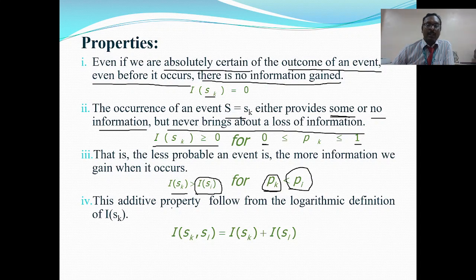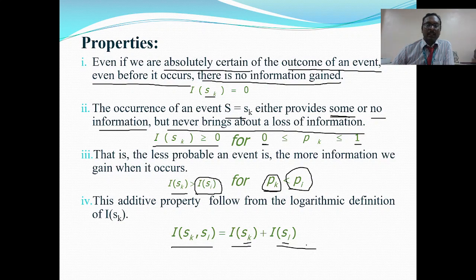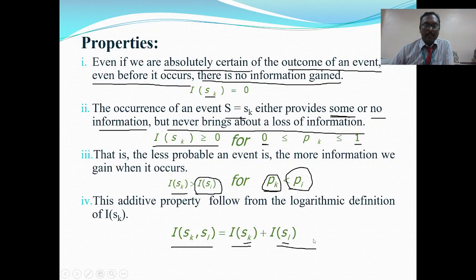Property 4: The additive property. If we have two statistically independent events Sk and Sl, then the information of their joint occurrence I(Sk, Sl) is equal to the addition of their individual informations: I(Sk) + I(Sl). These are the four properties of information theory. Thank you.